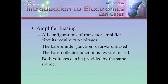Amplifier biasing — this is how we turn a transistor on. All configurations of transistor amplifier circuits require two voltages. The first voltage forward biases the base-emitter junction, and the next reverse biases the base-collector junction. Both voltages can be provided by the same source, because it's just how we're taking them in reference to the output — a 9-volt battery will give you 9 volts or negative 9 volts depending on how you hook it up.